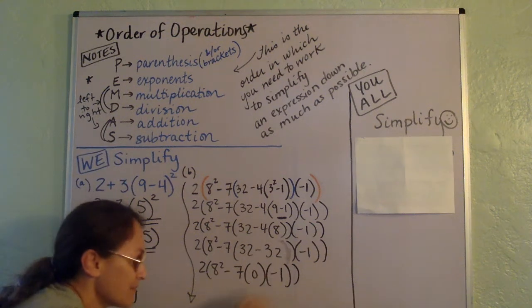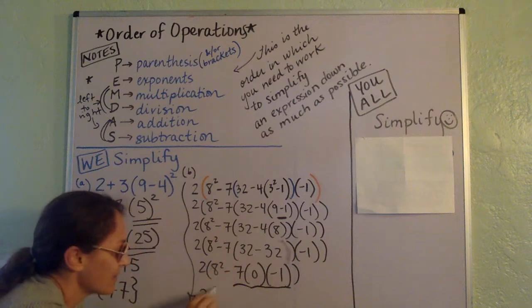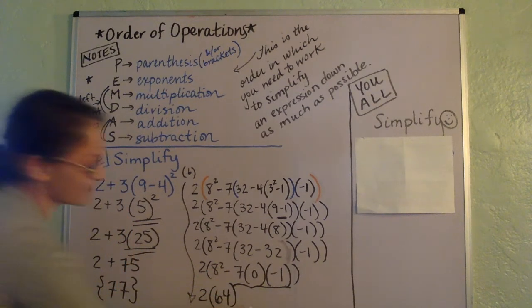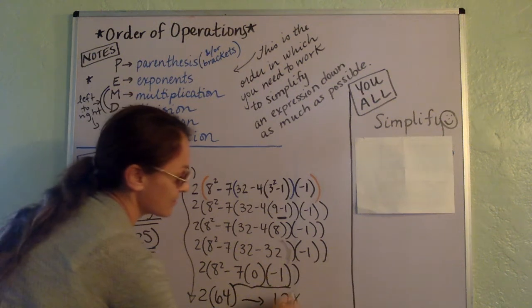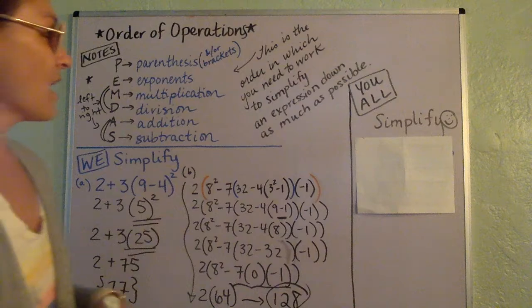And so now anything, of course, times 0 is 0. So all of this is gone. We can go ahead and evaluate that. So that's 64, and last step, 2 times 64 is 128. I'll circle it that time.